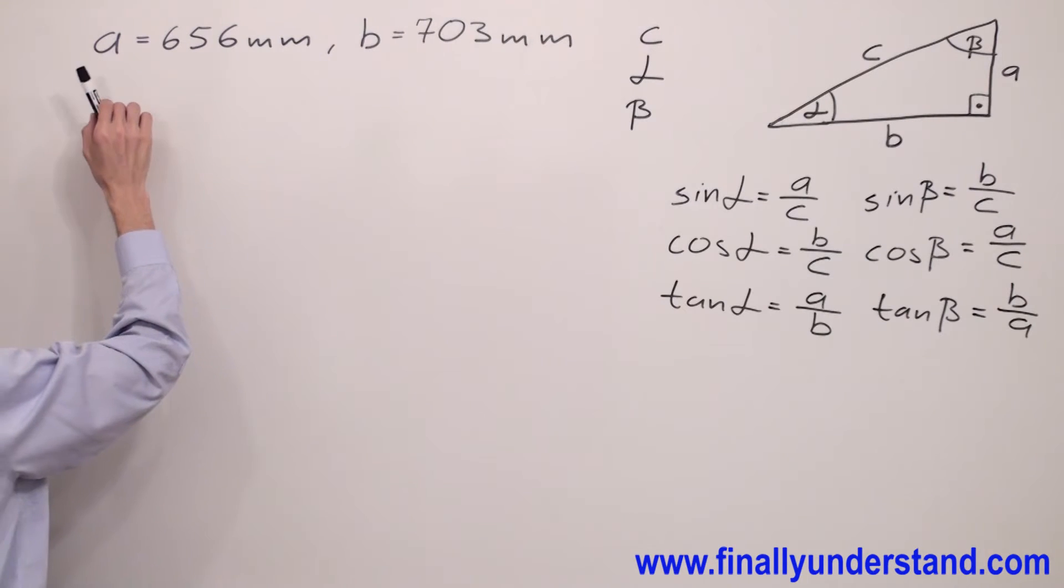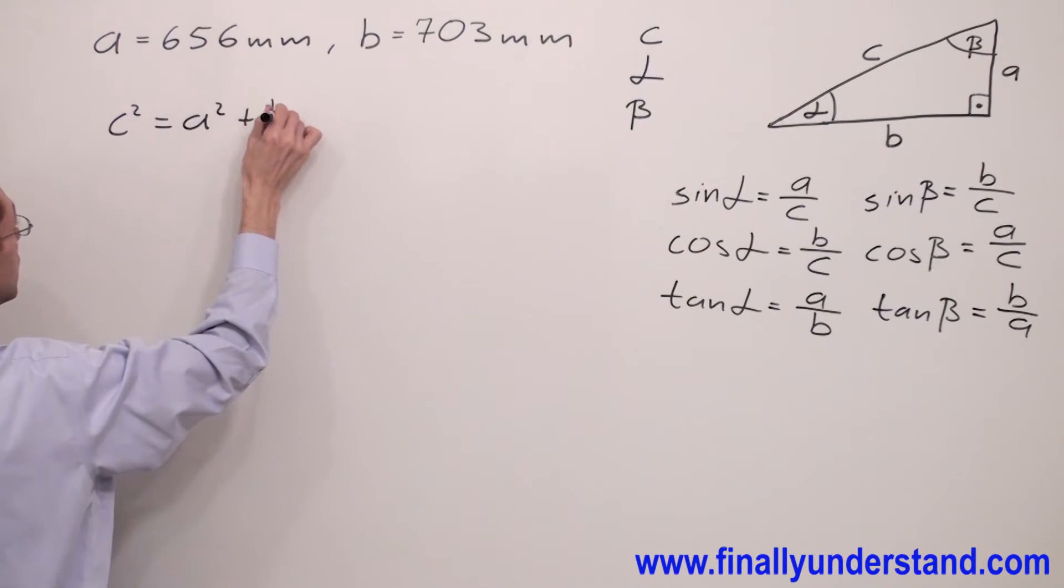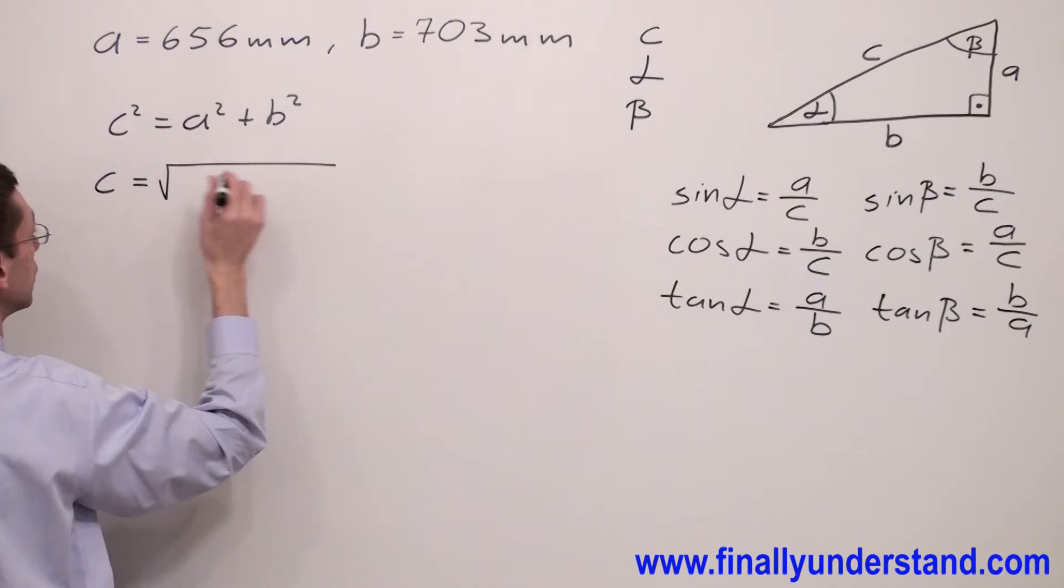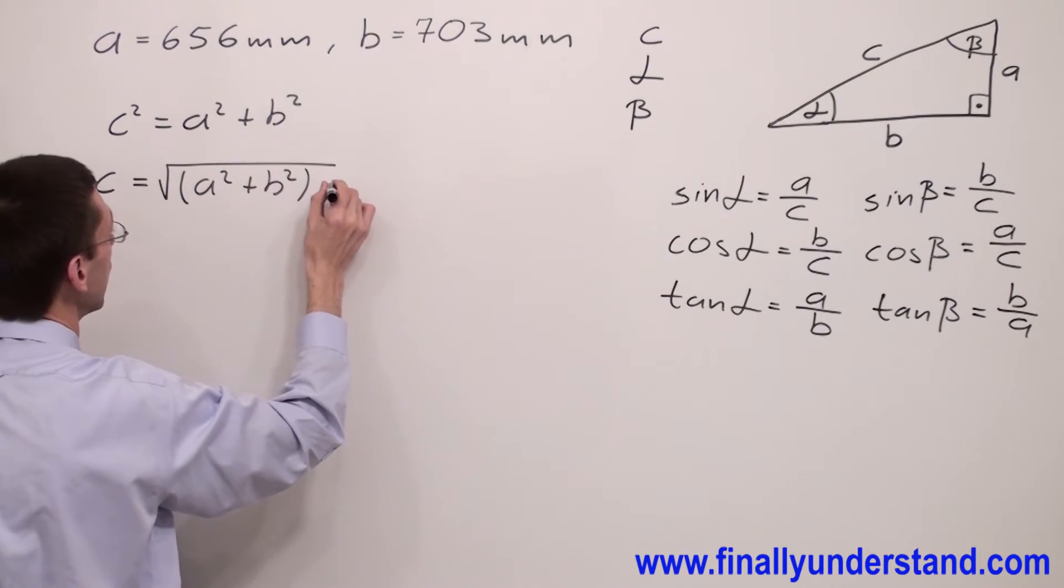I mean the length of side a and side b. We are going to find the length of side c by using Pythagorean theorem: c² = a² + b², where c equals square root a² + b², which is equal...